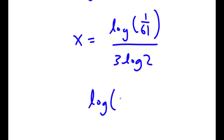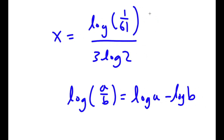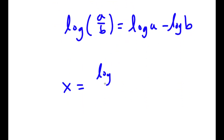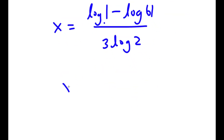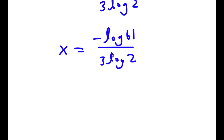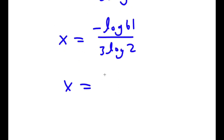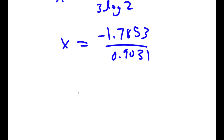Now if I have something in the form log a over b, this is equal to log a minus log b. So log of 1 over 61 equals log 1 minus log 61, over 3 times log 2. Now log 1 is simply equal to 0, so now I have x is equal to negative log 61 over 3 times log 2. Log 61 is 1.7853, so this is negative 1.7853 over 0.9031, which is equal to negative 1.7769.